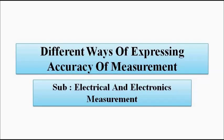Hello friends, welcome to Engineering Tutorial. In the previous videos we discussed about the accuracy of measuring instruments, static characteristics, error and correction. In that video I told you that in a separate video I will discuss the different ways of expressing the accuracy of measurement, so in this video we are going to discuss that. Before watching this video I would like you to please watch that video first so that you understand this video in a better way.